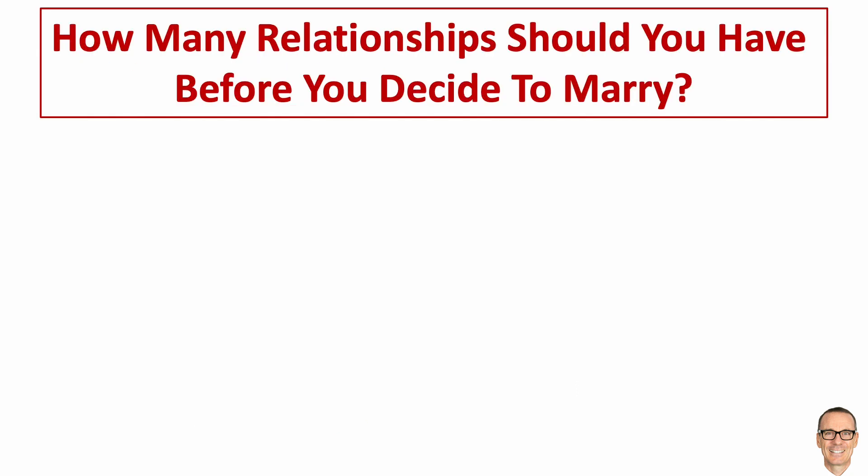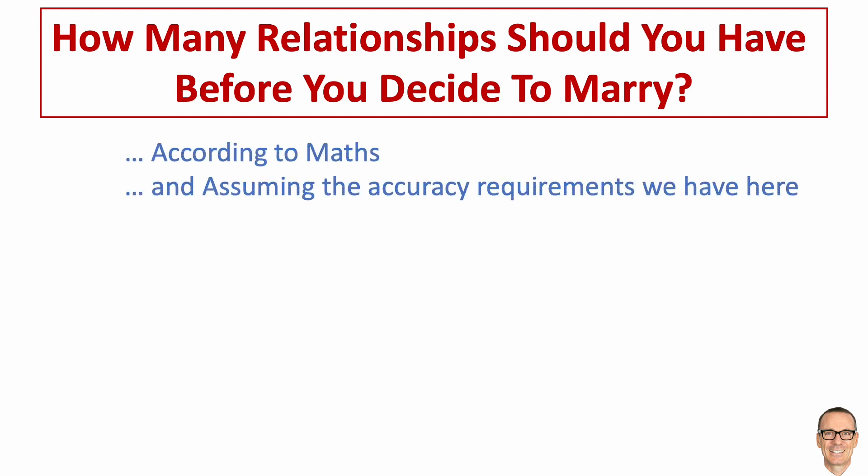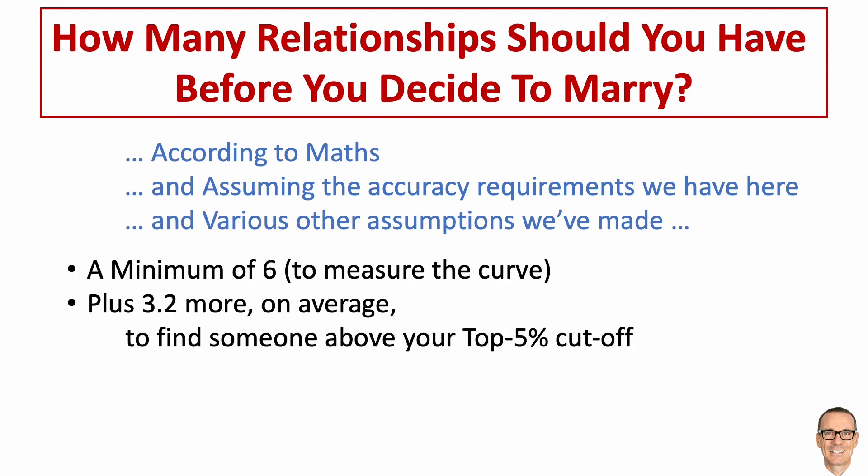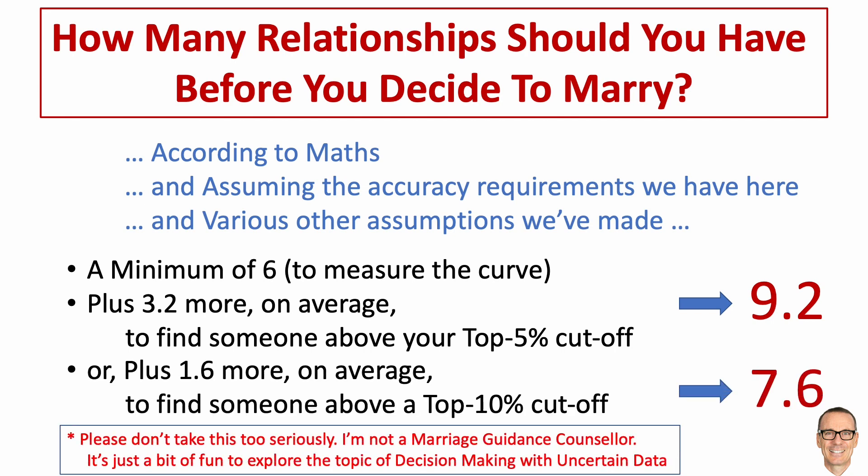So the answer to the original question, how many relationships should you have before you decide to marry, is, well, according to maths and assuming the accuracy requirements we have here and making all the assumptions we've made along the way, it's a minimum of 6 to measure the curve and decide on where your decision cutoff should be, and then you can expect to need to have another 3.2 on average to find someone over that cutoff. So that's 9.2 relationships. If you're willing to have a top 10% person, then it would be 7.6 relationships.